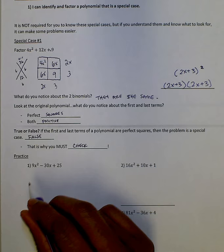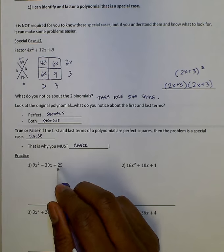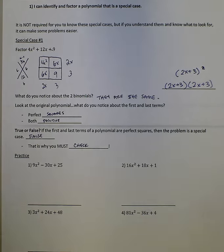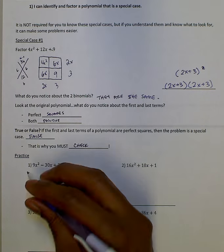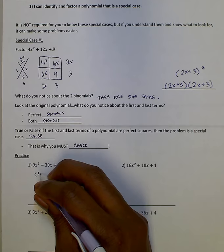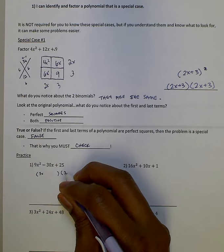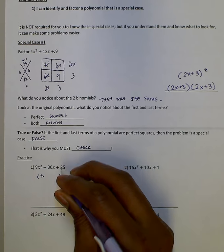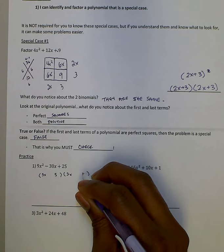All right, so I'm looking at this problem. I see 9x squared, I see 25. I notice that my first and my last term are positive perfect squares. And so I say, okay, well, that means the square root of this, 3x and 3x. Square root of 25 is 5 and 5.